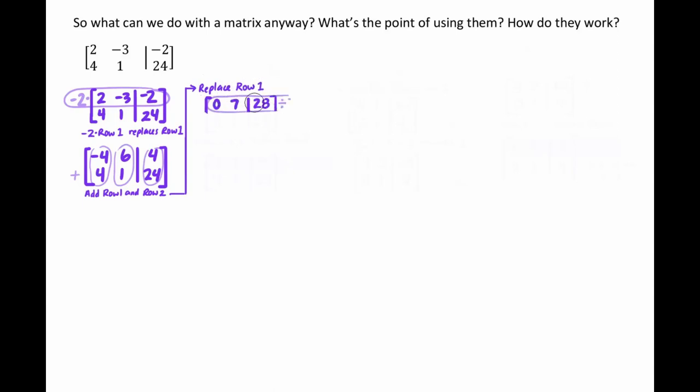And when we add row one and row two, what we're going to do is we're going to have to replace one of the rows. So if you replace the top row, it doesn't really matter which row you replace, it becomes zero and then seven and then 28. So that's saying, if we read that with our variables in each position, zero x plus seven y equals 28. We saw that in some of our work from the top of the page.